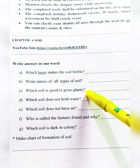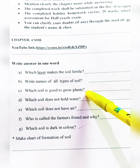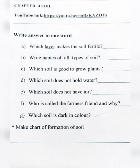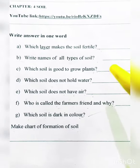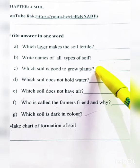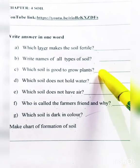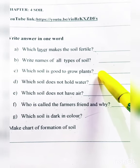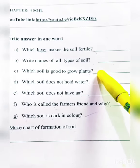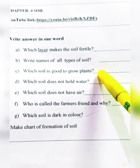Which soil is good to grow plants? Loamy soil is the best for growing plants. It has the capacity to hold both water and air, which is why loamy soil is the best soil for plant growth.